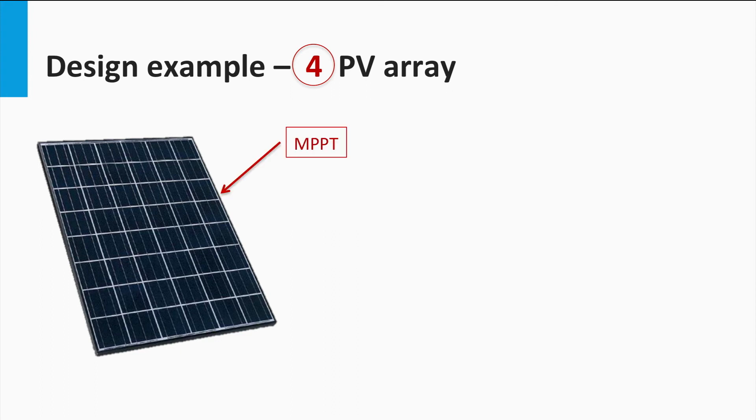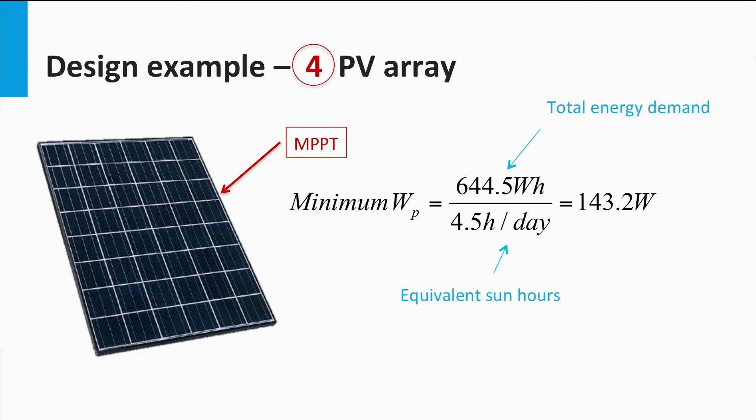Assuming that the panel would be operated at its maximum power point, we can find out the required number of panels as follows. We can first calculate the amount of minimum PV power required by dividing the total energy demand at the PV array output with the equivalent sun hours. Thus, the minimum PV power required is 143.2 Watts.